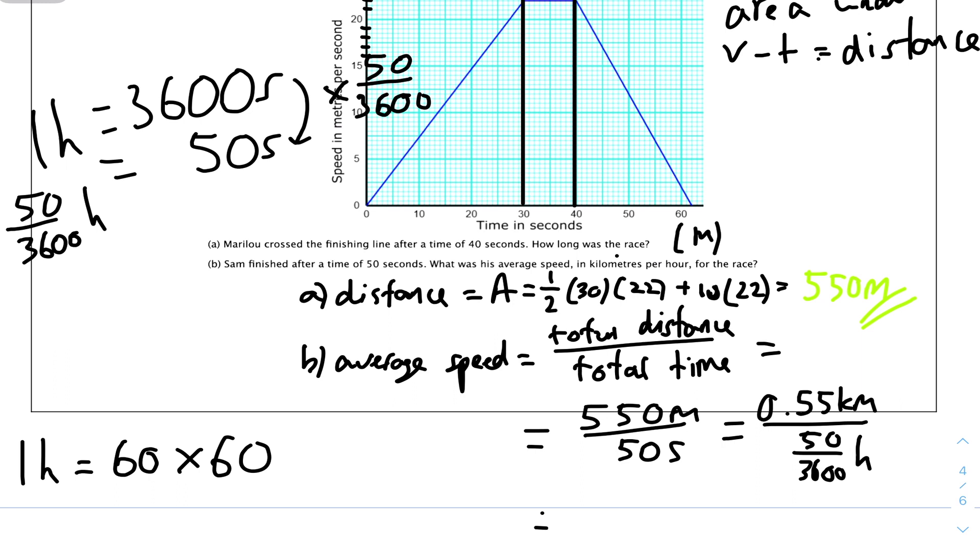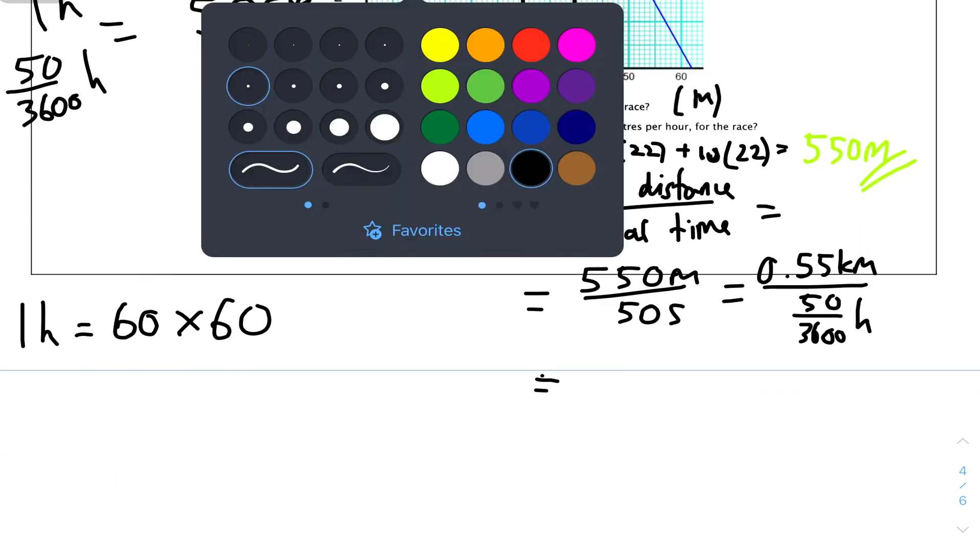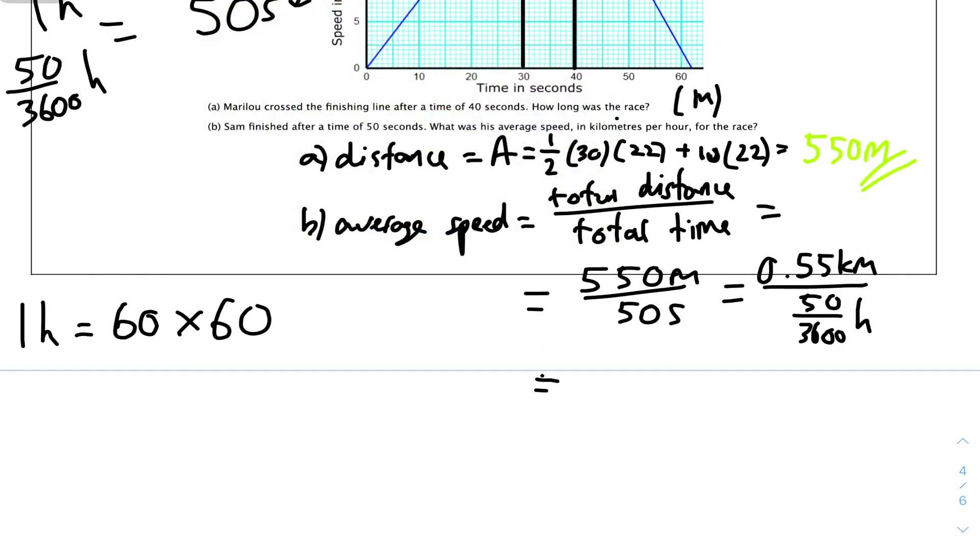To convert seconds to hours, we see how many seconds are in an hour. 1 hour consists of 60 minutes times 60 seconds, so 1 hour equals 3600 seconds. We need to find how many hours is 50 seconds. From top to bottom, multiply by 50 over 3600. Therefore the denominator will be 50 over 3600 hours. Type it into calculator: 0.55 over (50 over 3600) equals 198 over 5, which equals 39.6 kilometers per hour. And that's the final answer.